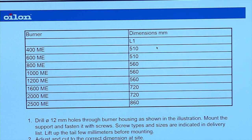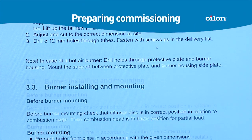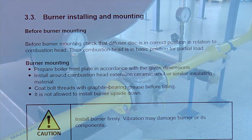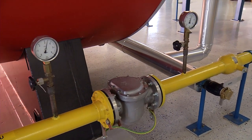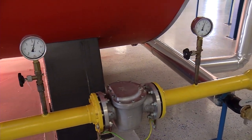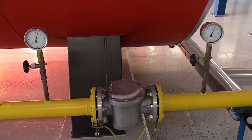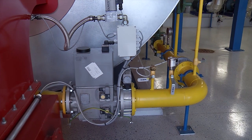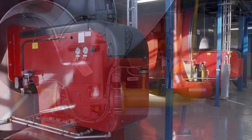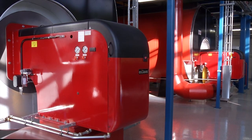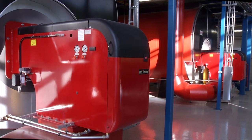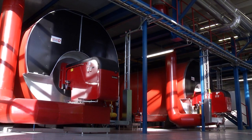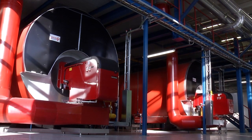In the burner manual you can find detailed instructions for installing and mounting the burner. Make absolutely sure that the fuel piping and installation are laid according to the regulations of local authorities, and that the burner is connected according to the electrical diagrams delivered with the burner. Pay special attention to the requirements for electrical equipment and their connections. Ensure that plant grounding is done correctly before commissioning the burner.